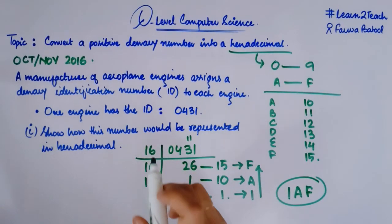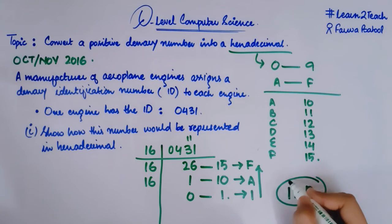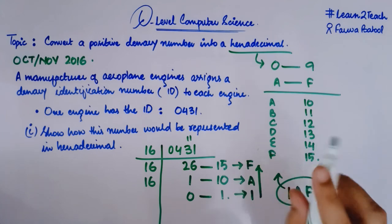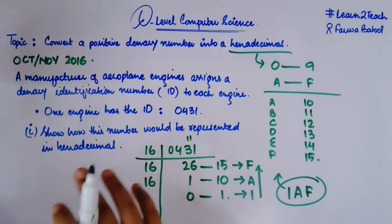It's a three marks question and 1 mark is assigned to each of these digits. This one carries 1 mark, this A carries 1 mark and this F carries 1 mark. So if you find a wrong hexadecimal digit, you will lose your 1 mark. So this is that much important.